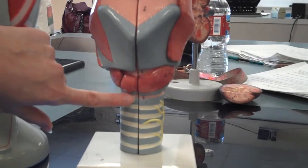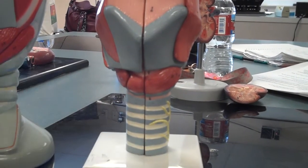You can see those same structures on this model. Here's the thyroid cartilage, the cricoid cartilage, and all of the tracheal cartilages.